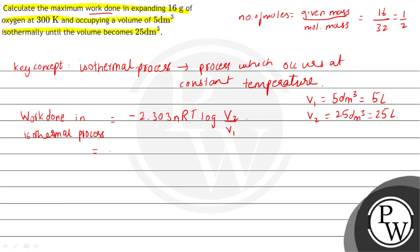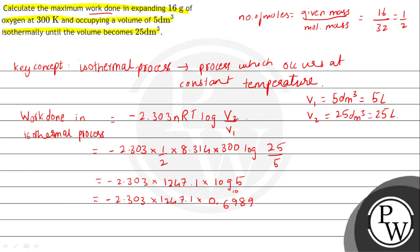Now, minus 2.303 into 1 by 2 into 8.314 into 300 log 25 by 5. So, we have minus 2.303 into 1247.1 into log 5. This is log 5 based to 10. So, it is minus 2.303 into 1247.1 into log 5 value as 0.6989. So, the answer comes out to be minus 2.01 into 10 to the power 3 joules.